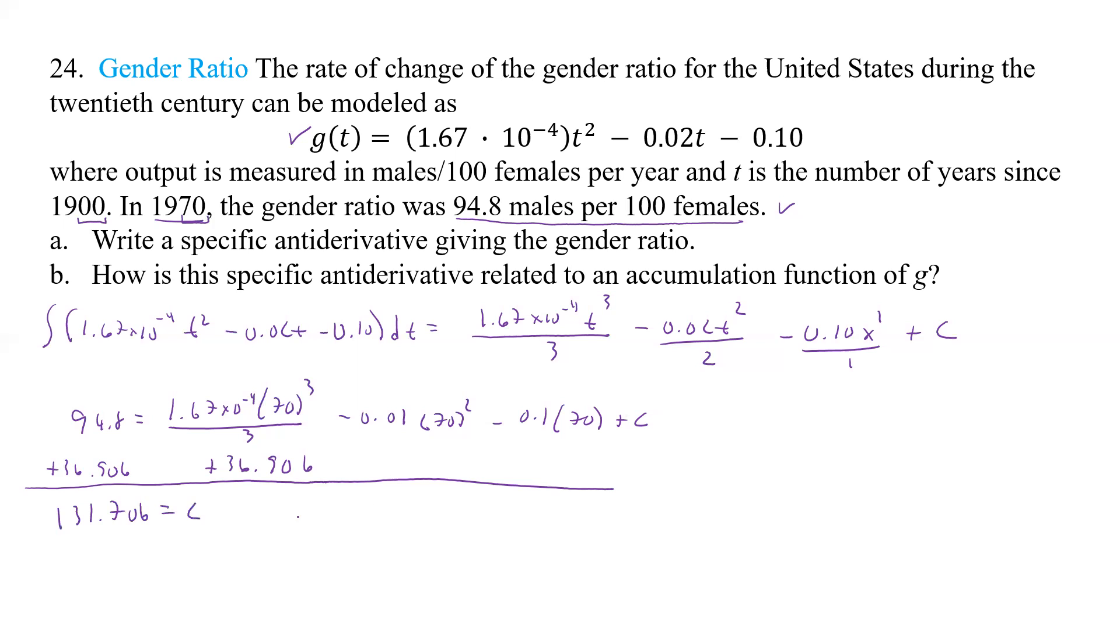And so now I have my specific antiderivative. And that's going to be, that was little g of t, so we'll call it now big G of t is equal to, and now we can rewrite this.